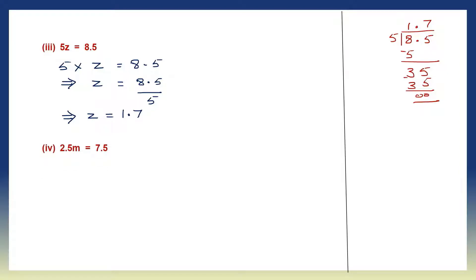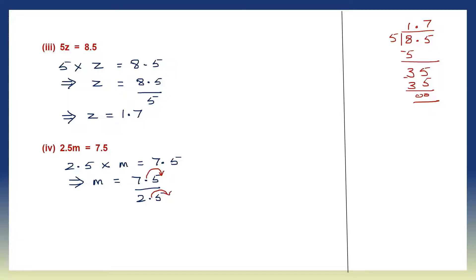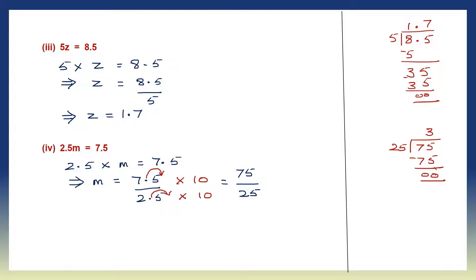Question 4: 2.5m is equal to 7.5, so 2.5 into m equals 7.5. To solve for m, we leave it on the left and 7.5 on the right. We transpose 2.5 to the right hand side — it becomes division. Now both are decimal numbers, so I'm going to change them to whole numbers by multiplying both by 10. 7.5 becomes 75 and 2.5 becomes 25. So let's divide 75 by 25. 25 into 3 is 75. So the value of m is 3.